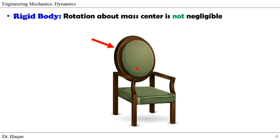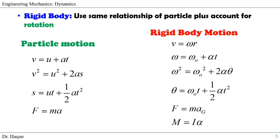Now let's talk about why a rigid body's rotation about its mass center cannot be neglected. For example, if we consider the chair and apply a load from the back to push it forward, the chair can tip over or slide. There will be a rotation tendency, and to find that answer we cannot assume this body as a particle — we cannot neglect the rotation. For a rigid body, we use the similar relationships of particle motion plus we have to account for the rotation part in rigid body analysis.